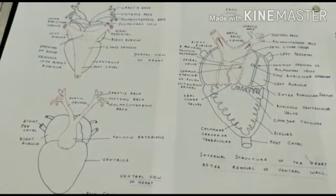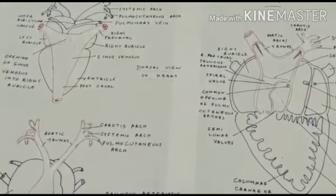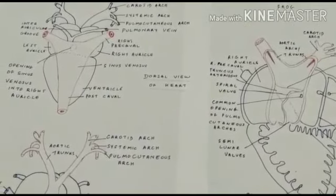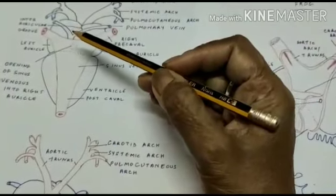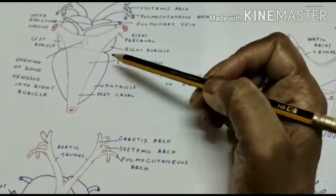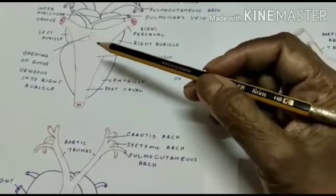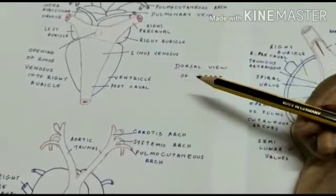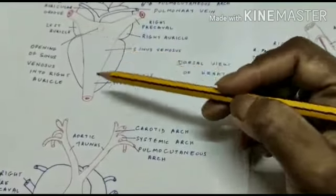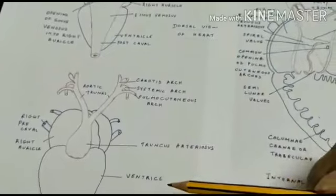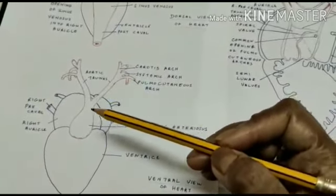In today's video we will try to understand the structure of the frog's heart. The frog's heart is basically made up of three compartments: two auricles and a ventricle. Apart from this, there are certain other structures which also help in the working of the heart. On the dorsal side the sinus venosus is present, which is roughly a triangular structure, and on the ventral side a bulbous structure is present which is the truncus arteriosus.